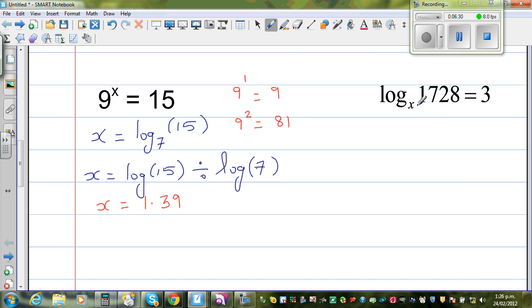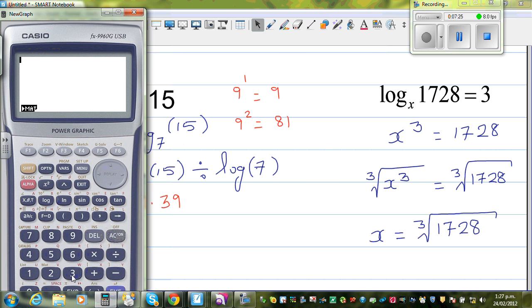Now here again, this is in log form: log base x of 1728 equals 3. We want to find the value of x. Changing this into exponent form, I can say x to the power 3 equals 1728. To get rid of x cubed, I have to take the cube root of both sides. Cube root of x cubed equals cube root of 1728. The cube root and x cubed are opposites - they cancel each other out. So x is nothing but the cube root of 1728. Let us check on the calculator.